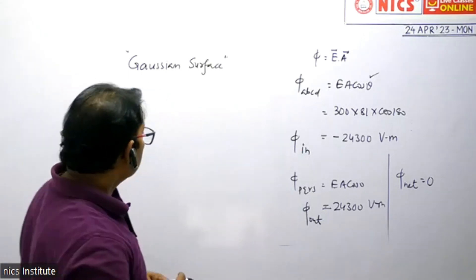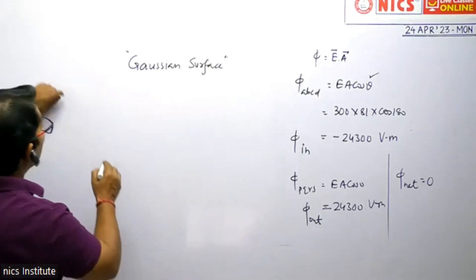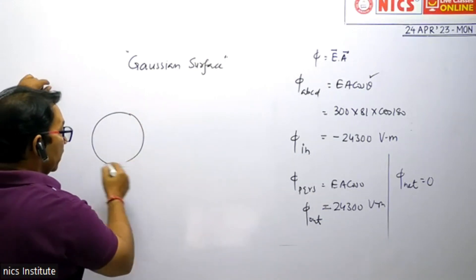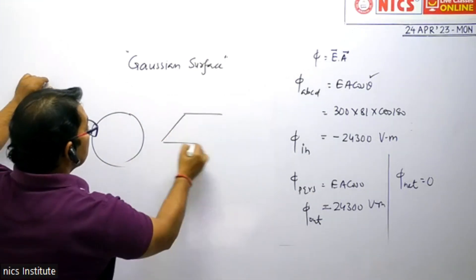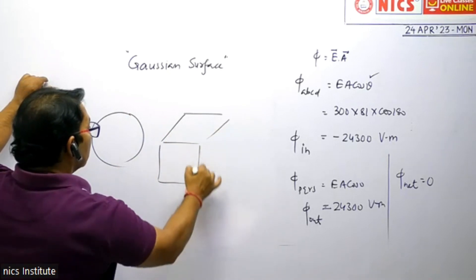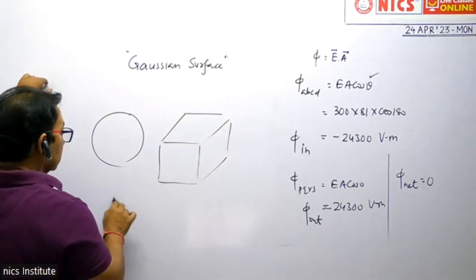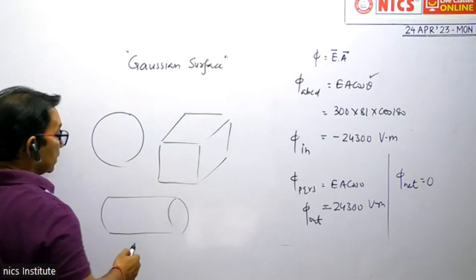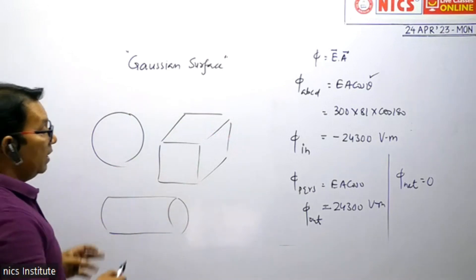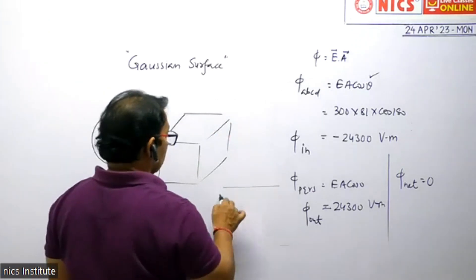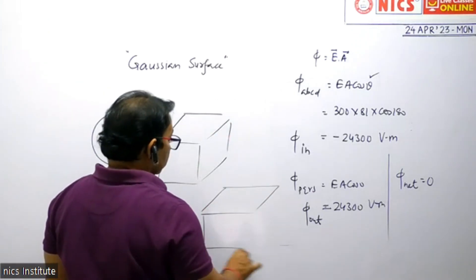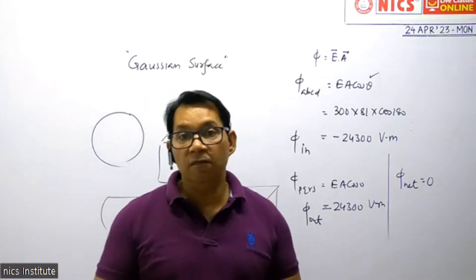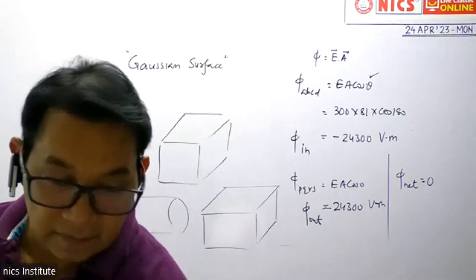So what is this Gaussian surface? What is the volume enclosed? A symmetrical Gaussian surface could be a sphere. Another symmetrical Gaussian surface is a cube. Another symmetrical Gaussian surface is a cylinder. A cuboid is also a Gaussian surface. Any surface which encloses some volume in it is called a Gaussian surface.